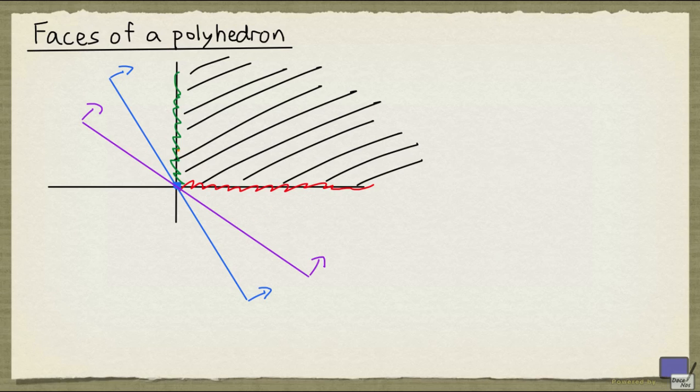In any case, these inequalities are called valid inequalities, valid for the polyhedron. And we're going to define the face of a polyhedron as follows.